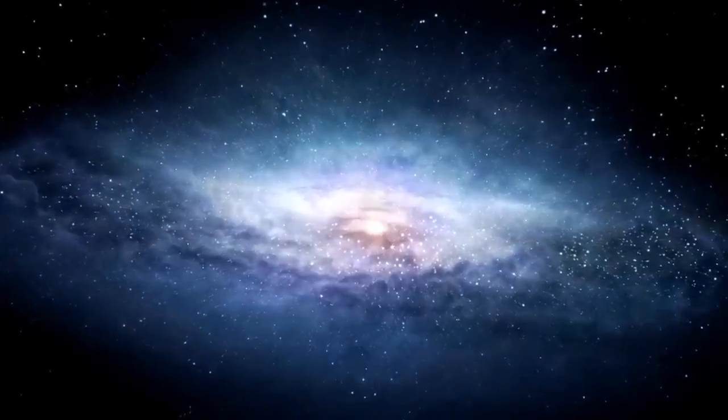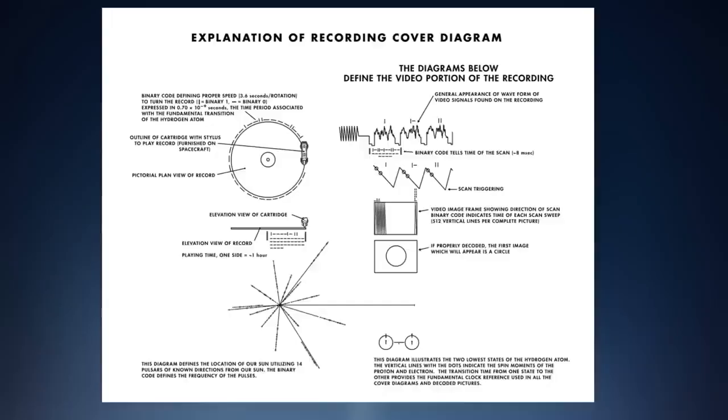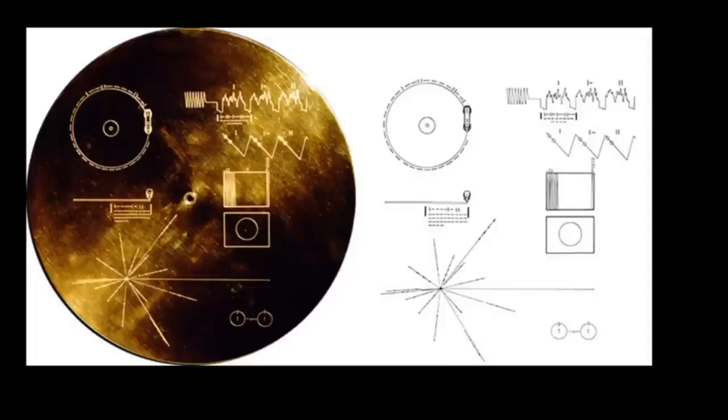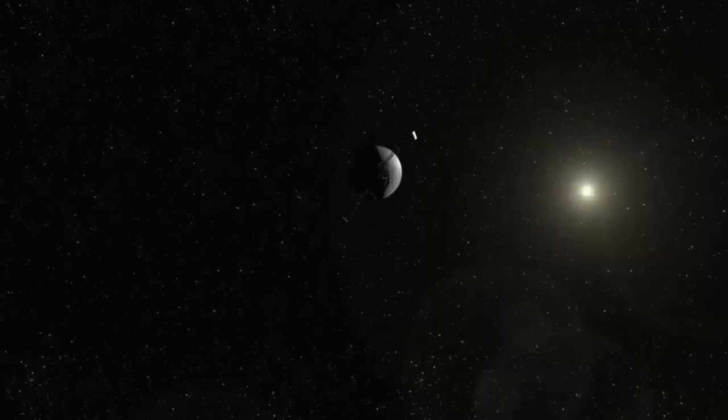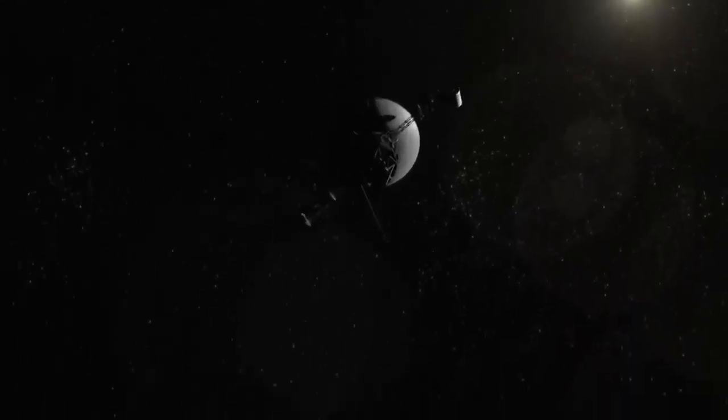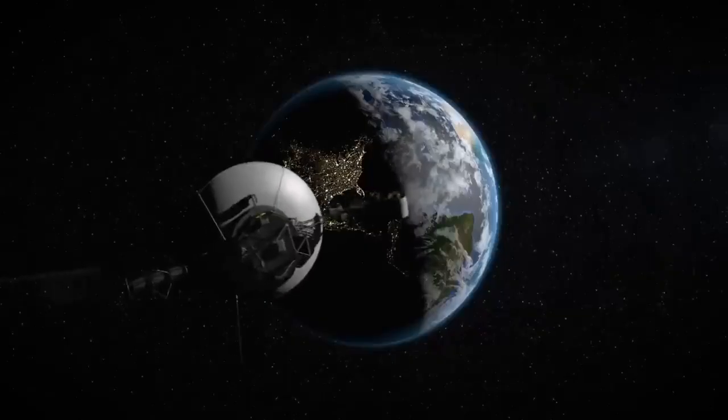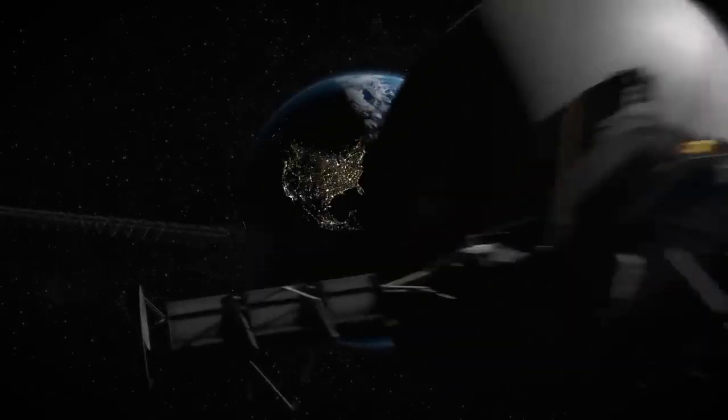You might be surprised to know that the Golden Record, a message from humanity to the cosmos that includes greetings in 55 languages, images of people and places on Earth, and music ranging from Beethoven to Chuck Berry's Johnny B. Goode, is carried by Voyager 1. The record includes symbols that depict Earth's position in relative to several pulsars. The records also include instructions for playing them with a cartridge and a needle, similar to a vinyl record player.